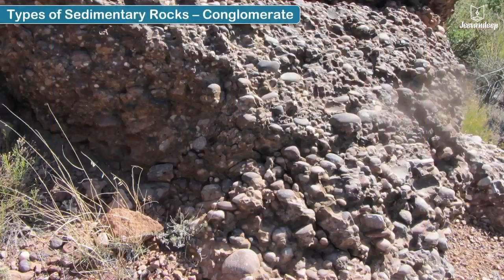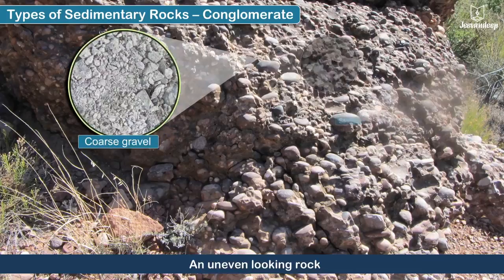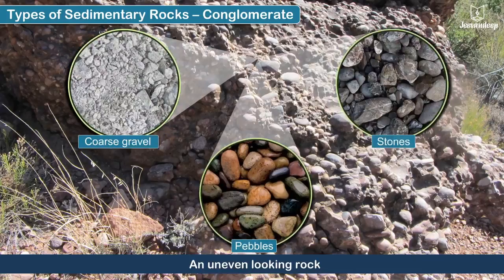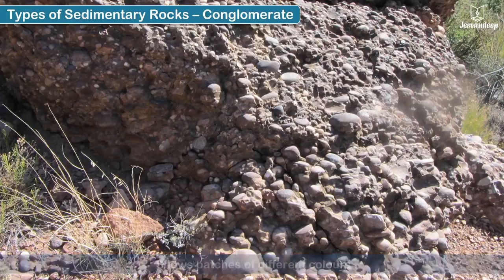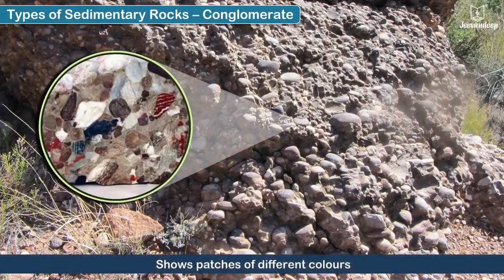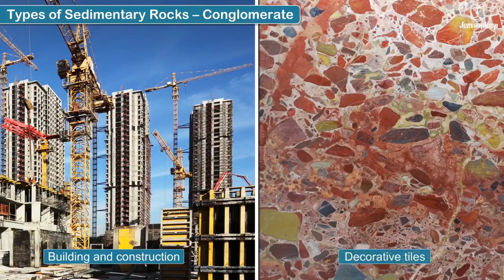Conglomerate: this rock consists of coarse gravel, stones, and pebbles which solidify into an uneven-looking rock. It even shows patches of different colors. The conglomerate rock is used for building and construction work, and is also seen in decorative tiles.